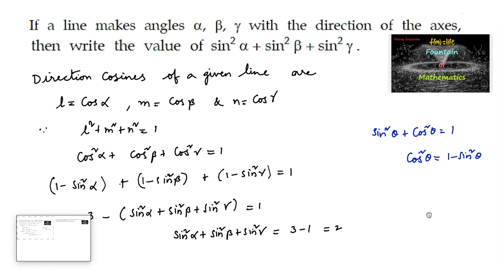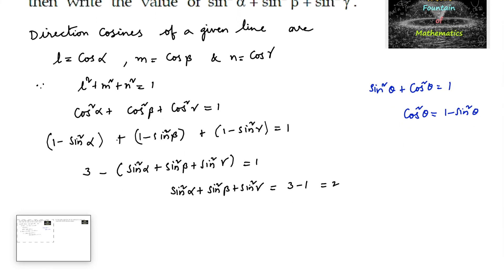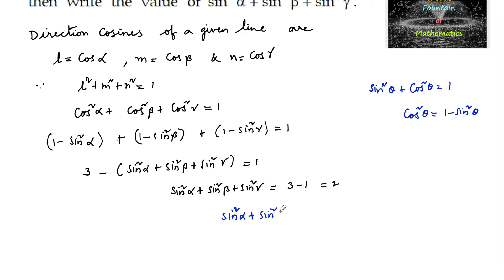We conclude that sin squared alpha plus sin squared beta plus sin squared gamma is equal to 2.